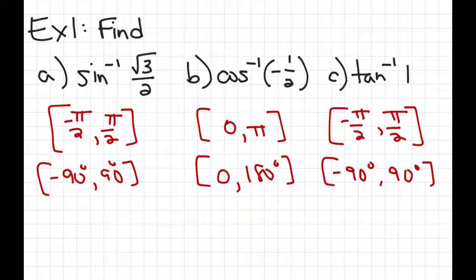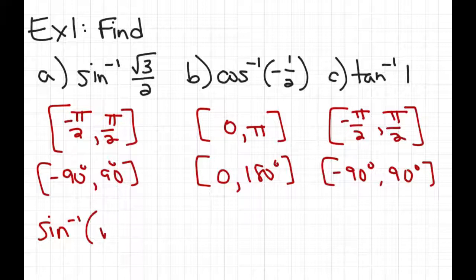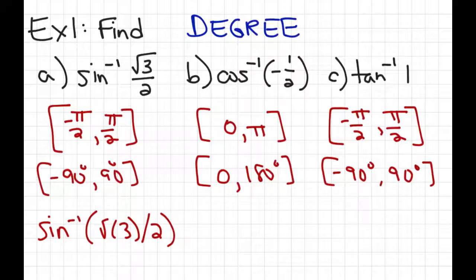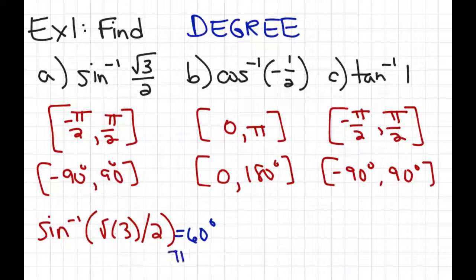If you're doing problem A on your calculator using the inverse sine function, be cautious of how you type it in if your calculator has the old operating system — you need to close the parentheses around the 3 before putting in the divide by 2. I recommend being in degree mode, because if you get the answer in degrees, you can always change it back to radians. In degree mode, the inverse sine of square root of 3 over 2 gives you 60 degrees, which you can tell me is pi over 3.